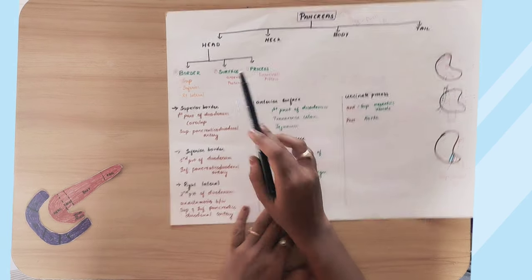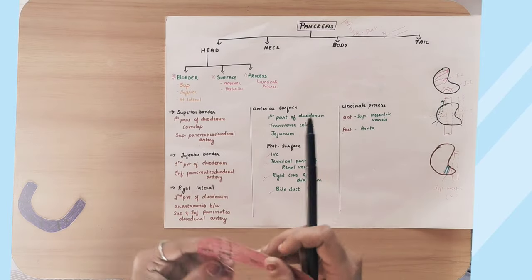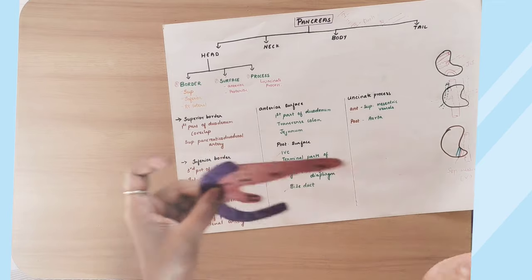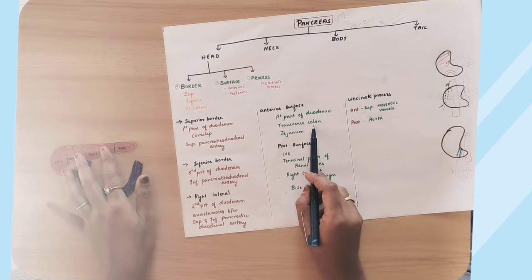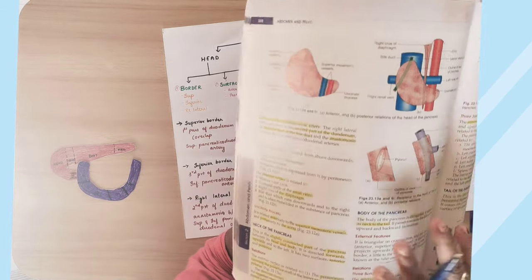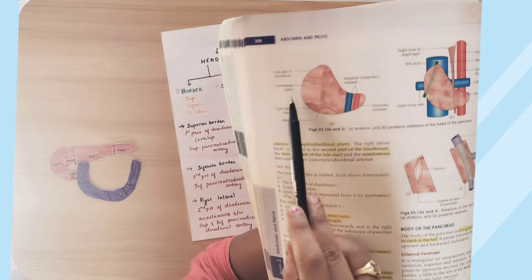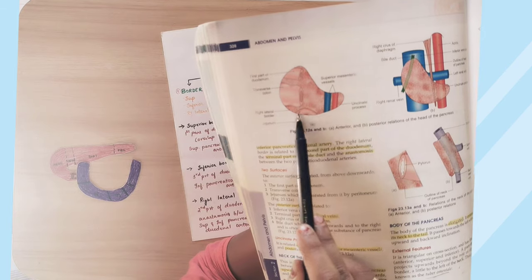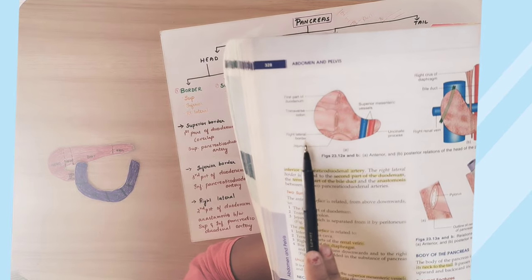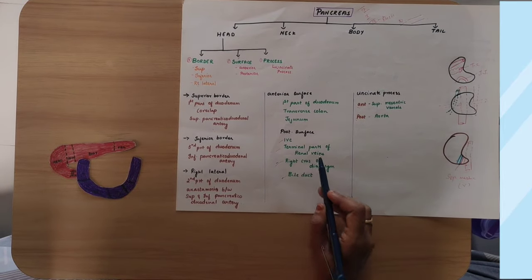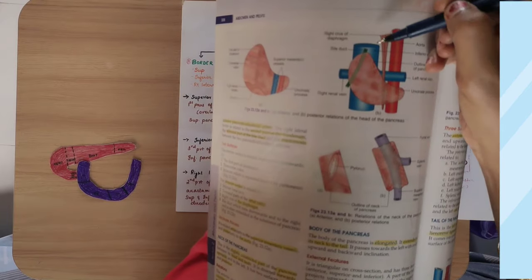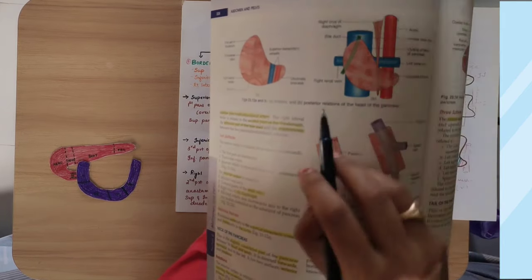The head has two surfaces. The anterior surface comes in contact with the first part of the duodenum, the transverse colon, and jejunum. The posterior surface is related to the inferior vena cava, renal veins, right crus of the diaphragm, and bile duct.